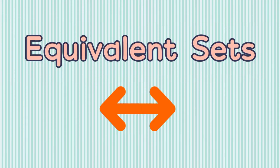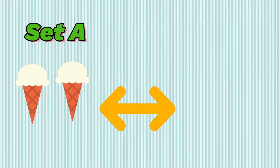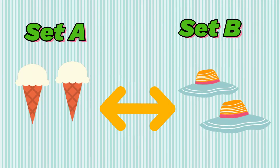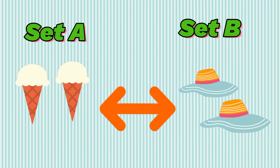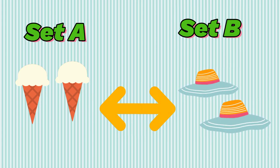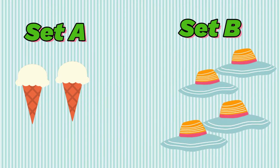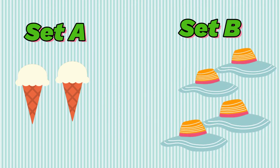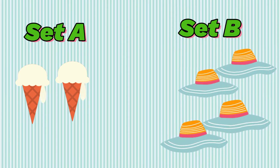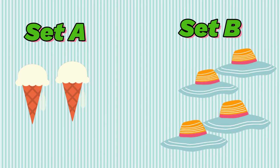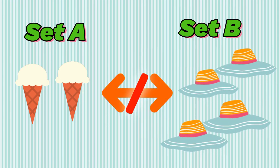Now, what are equivalent sets? If set A and set B have different objects but have the same number of objects, we say that they are equivalent sets. But if set A and set B have different objects and a different number of objects, we say that they are not equivalent.